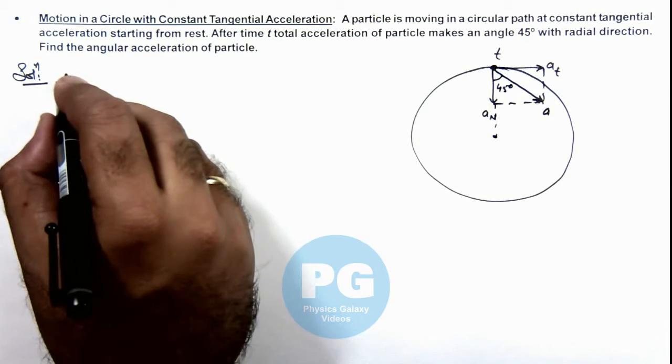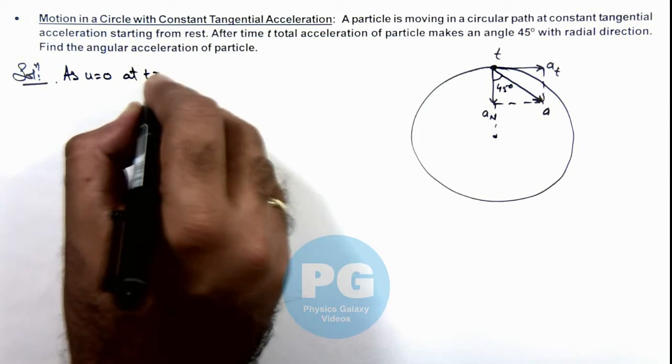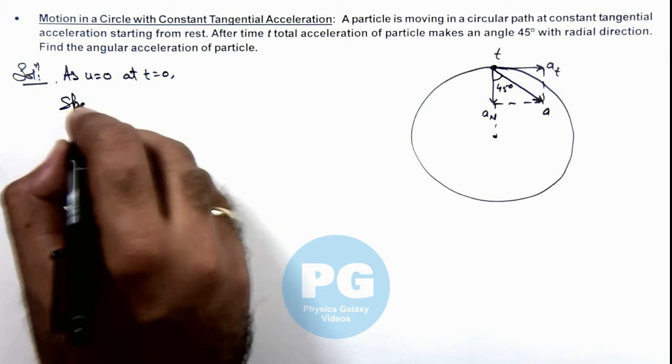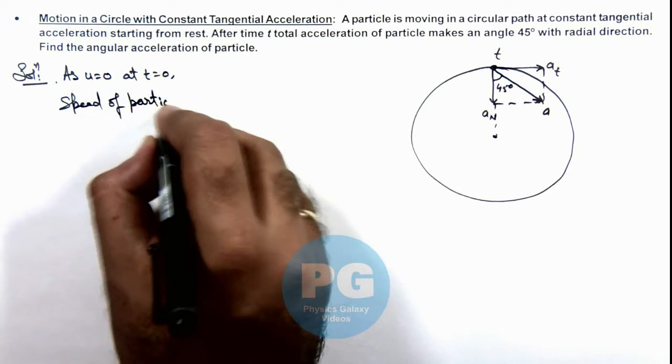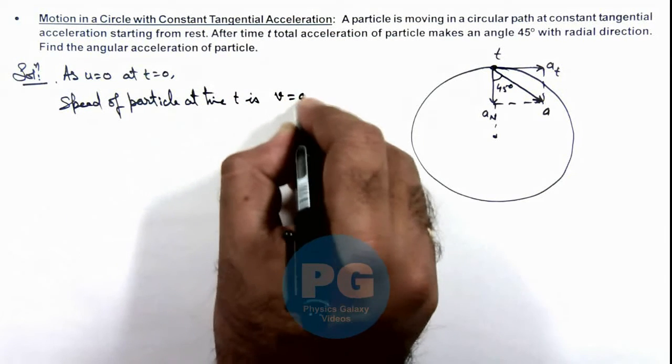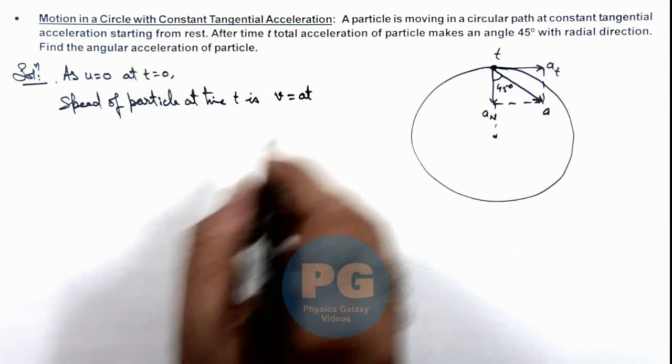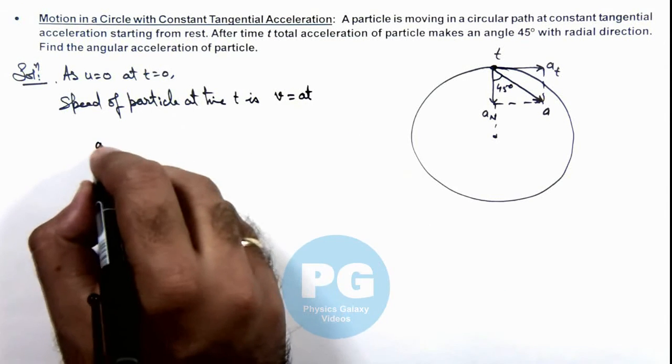So we can write: u equals zero at t equals zero. The speed of the particle at time t is ay*t. If the speed of the particle is ay*t, we can write this at time t.